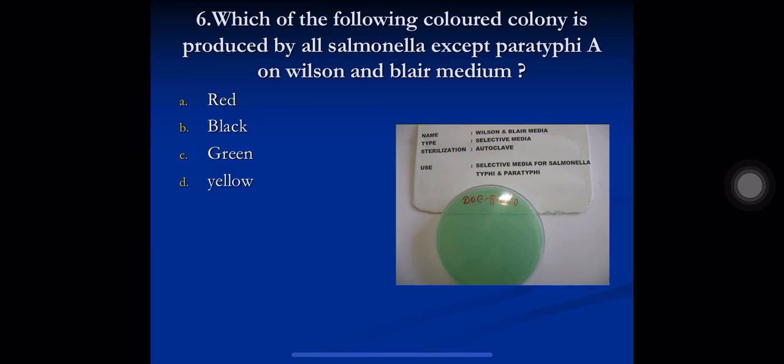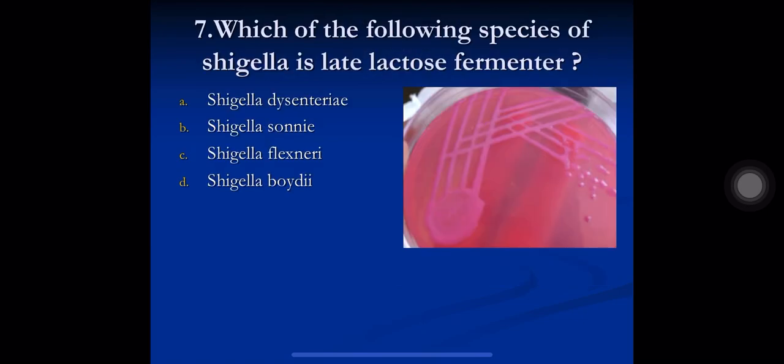Question 7: which of the following species of Shigella is a late lactose fermenter? A) Shigella dysenteriae, B) Shigella sonnei, C) Shigella flexneri, D) Shigella boydii. The correct option is B) Shigella sonnei. Shigella sonnei is a late lactose fermenter, giving pink colonies on MacConkey agar after two to three days, whereas regular lactose fermenters give pink colonies within 24 hours.